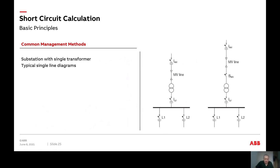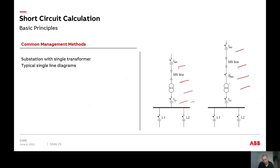On the right you can see two single line diagrams — both are basically the same, just different representations. The first has no switch disconnector, only a circuit breaker followed by cable, transformer, and LV cable. The second has a medium voltage circuit breaker, cable, an isolator or switch disconnector, then the transformer — it's practically the same with just an additional isolating function before the transformer.